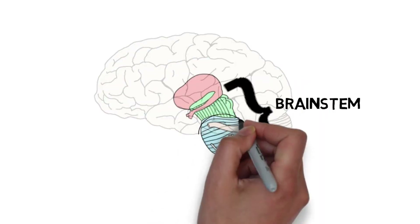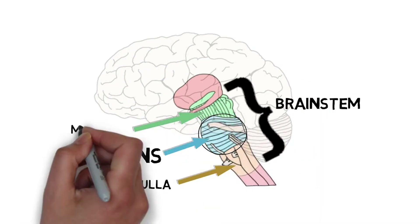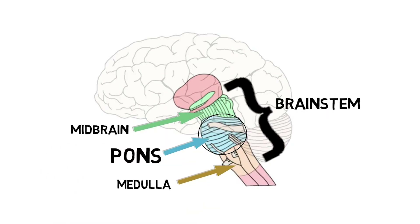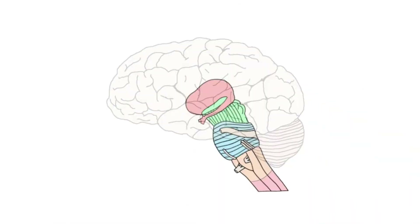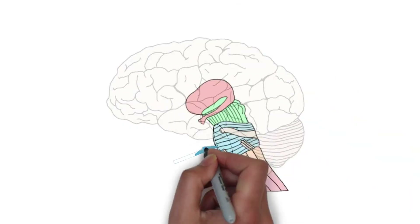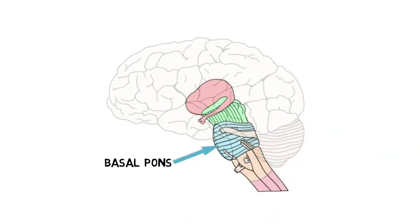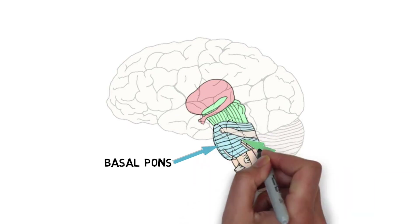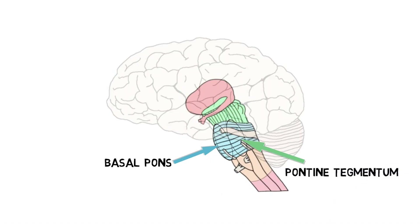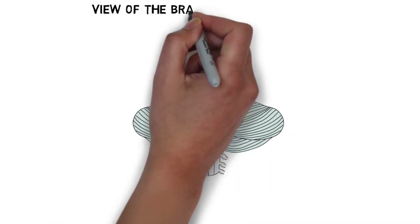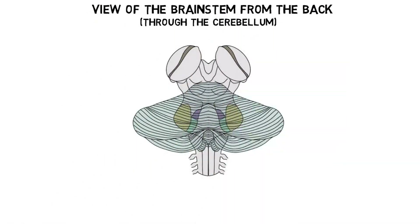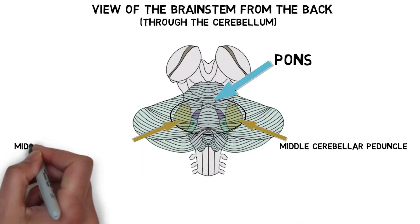The pons is a major division of the brainstem, found above the medulla and below the midbrain. Pons is Latin for bridge, and it was so named because the anterior part of the pons, known as the basal or basilar pons, causes the pons to look like a bridge that connects the two hemispheres of the cerebellum. The region behind the basal pons is called the pontine tegmentum or dorsal pons. The pons is attached to the cerebellum by the middle cerebellar peduncles, a major pathway between the brainstem and cerebellum.